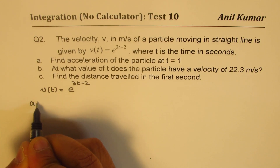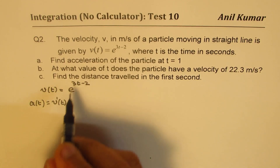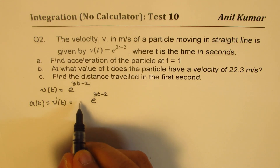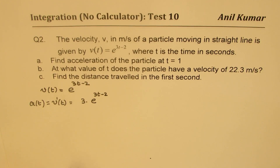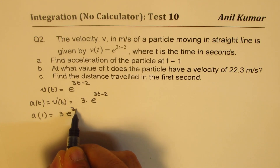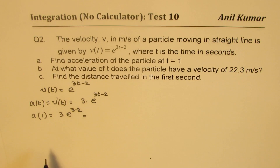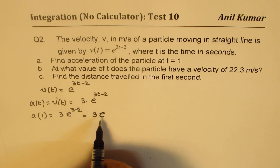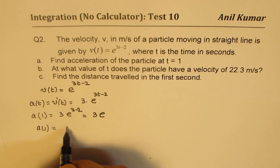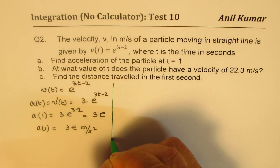For part A, we need to find the acceleration at t = 1. Acceleration is the derivative of velocity. The derivative of e^(3t−2) is e^(3t−2) times the derivative of the exponent, which is 3. So acceleration = 3e^(3t−2). Substituting t = 1, we get 3 times e^(3·1−2) = 3e^1 = 3e. So the acceleration at t = 1 is 3e meters per second squared.